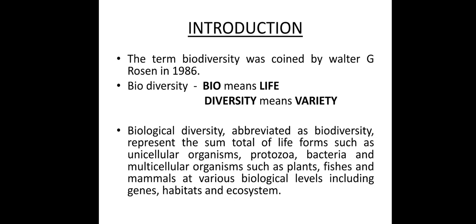There is a definition of biological diversity and biodiversity. Here we are going to discuss the sum total of life forms such as unicellular organisms, protozoa, bacteria, and multicellular organisms such as plants, fishes, and mammals — they all have some variability. They show variation in their genetical level, species level, and ecosystem level.